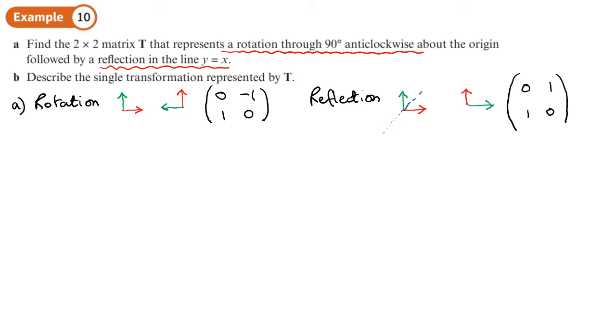If I want to find a matrix T, I need to multiply these together. And the order is important. Now, when you do transformations, you start with the first one here on the right and you work your way to the left. Yeah, the same order. We would multiply them in if you wanted to apply two transformations to a single point. So the first transformation, which is the rotation, that's the matrix we write last.